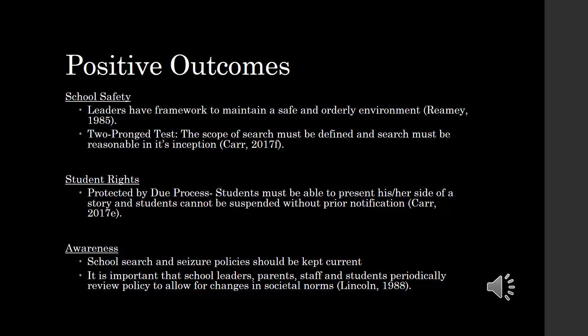School leaders have the responsibility of balancing student rights against maintaining a safe and orderly school environment. One of the positive outcomes of court cases such as New Jersey v. TLO and Goss v. Lopez is that leaders have a framework upon which to base searches and seizures, providing consistency for school leaders and students. By providing structure to the process, the two-pronged test strives to protect student rights and does not permit school leaders to infringe upon these rights without first determining the scope of the search and second determining if a reasonable cause for the search exists.